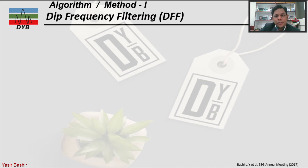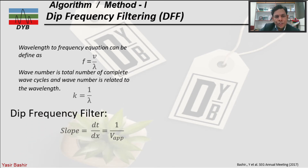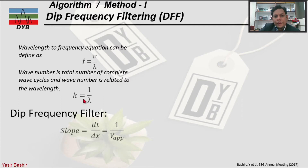Algorithm one is the frequency filtering method. Using the wavelength-frequency equation, frequency f equals velocity v over wavelength lambda. The wavenumber, denoted k, is inversely proportional to wavelength, meaning a low wavelength corresponds to a low number of wave numbers.